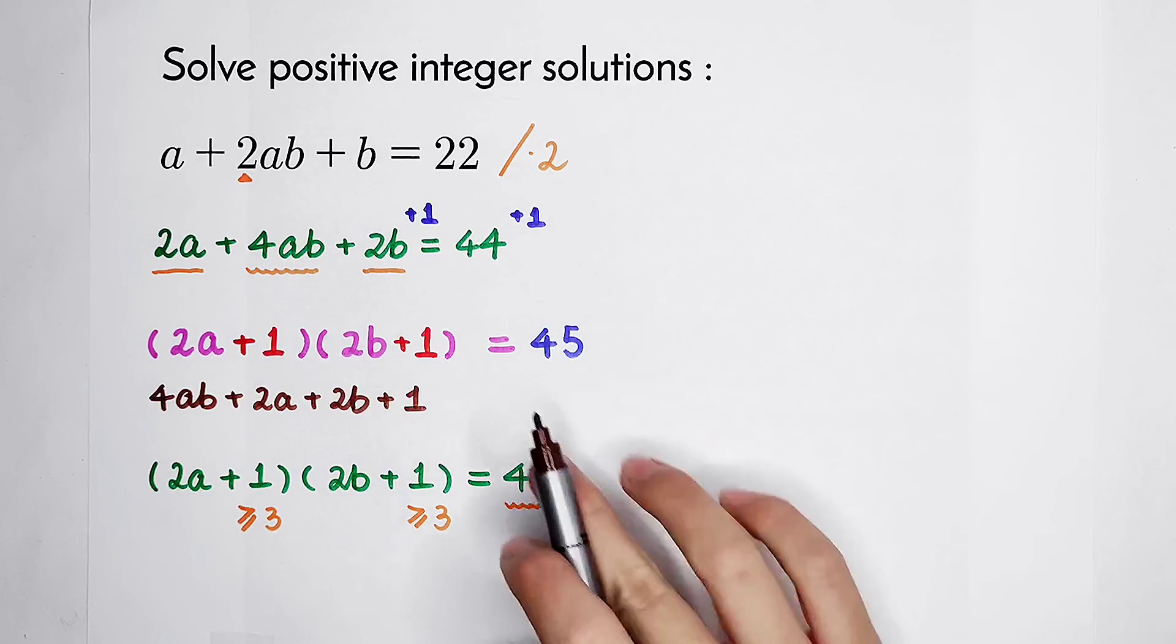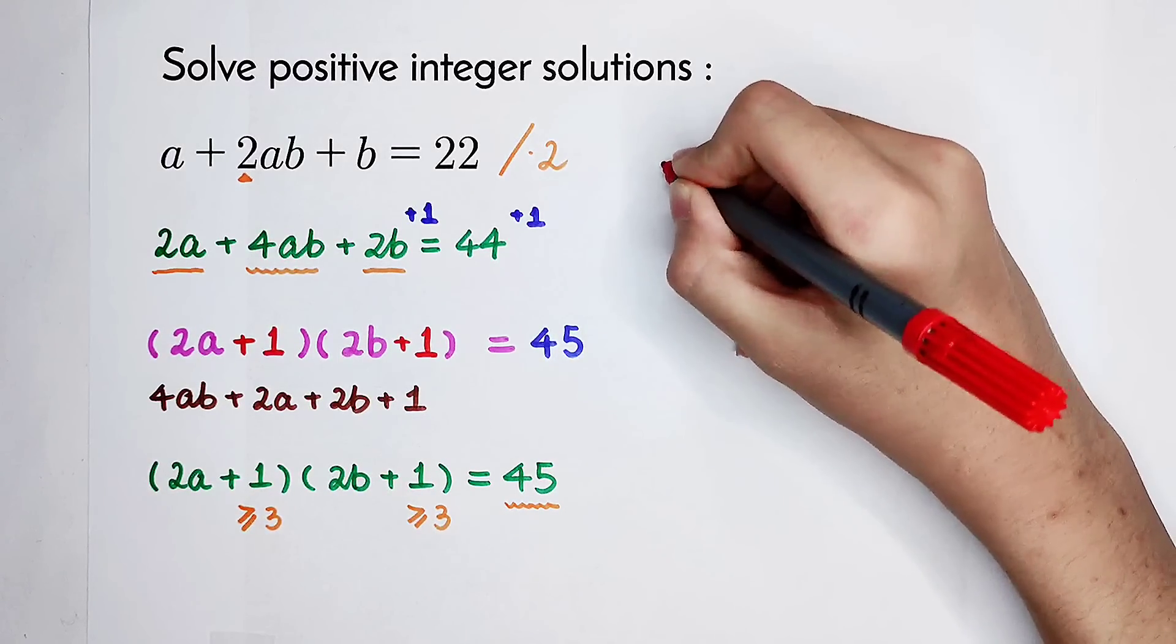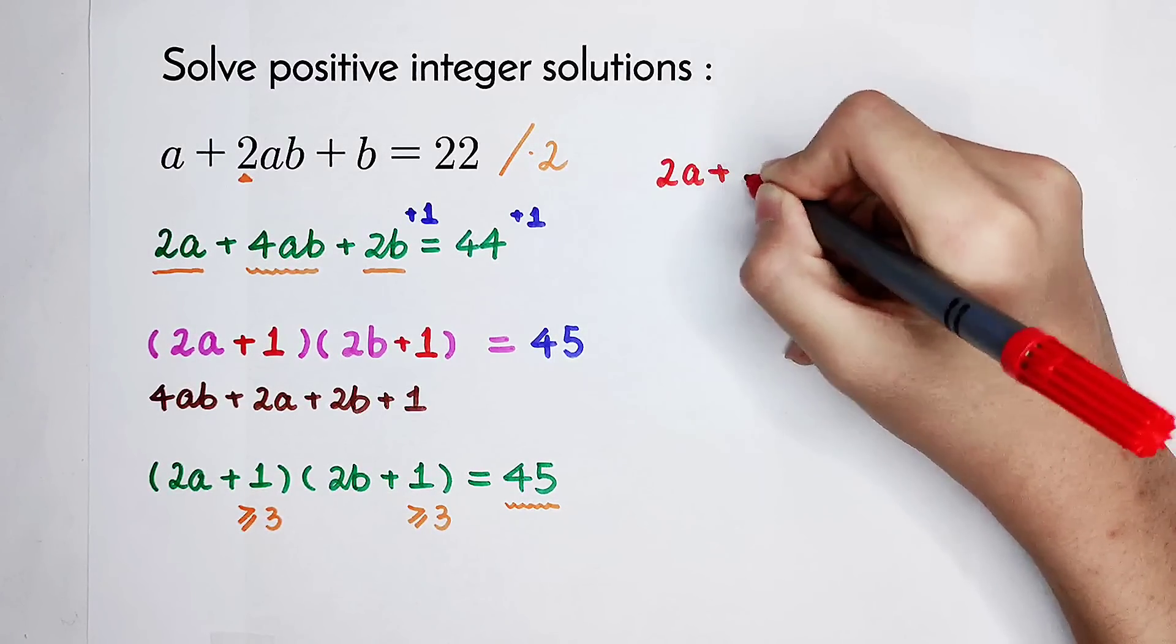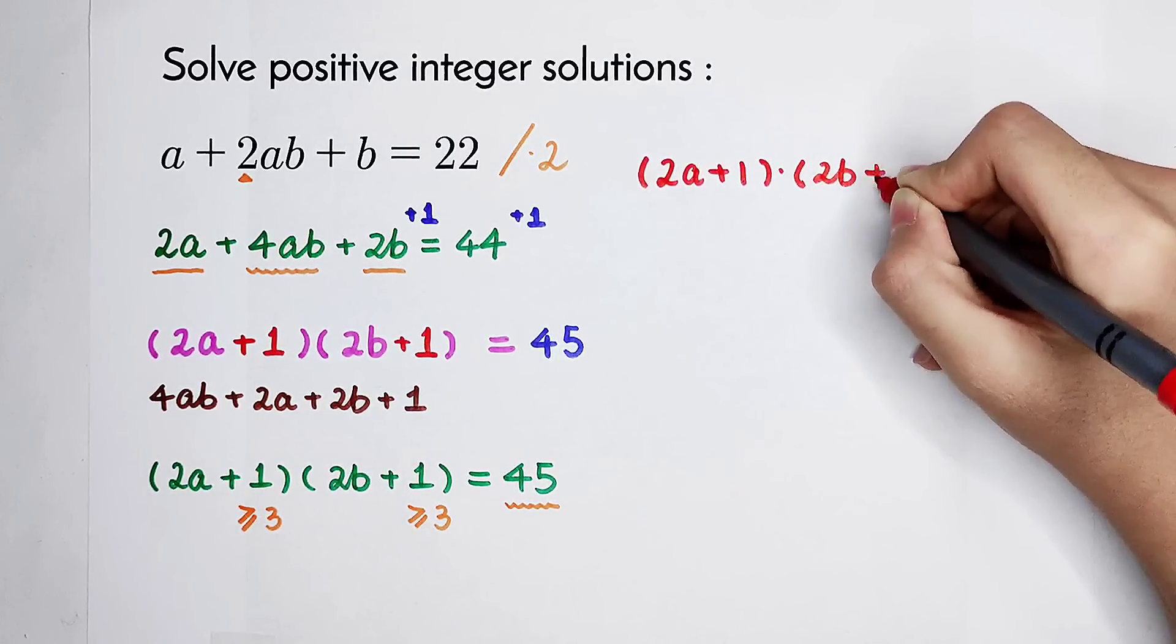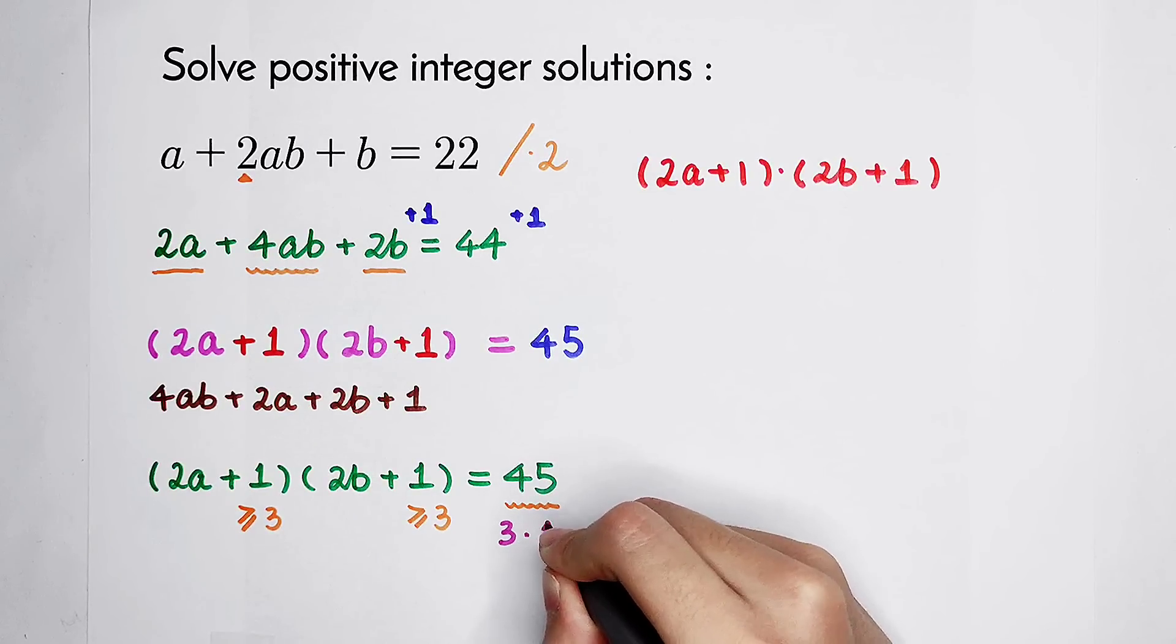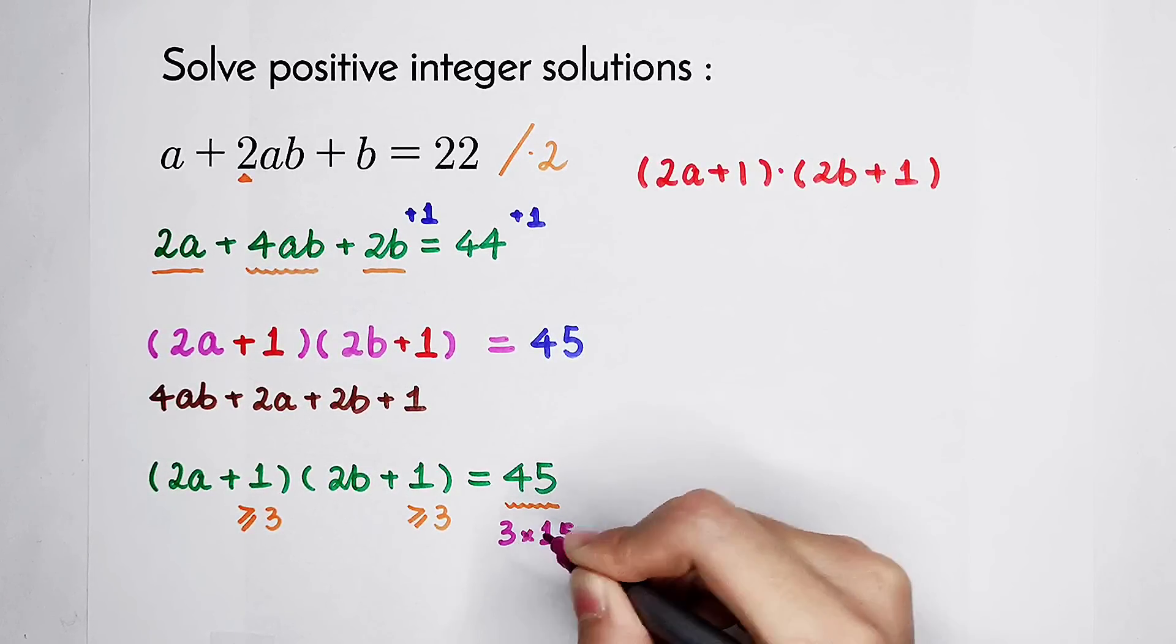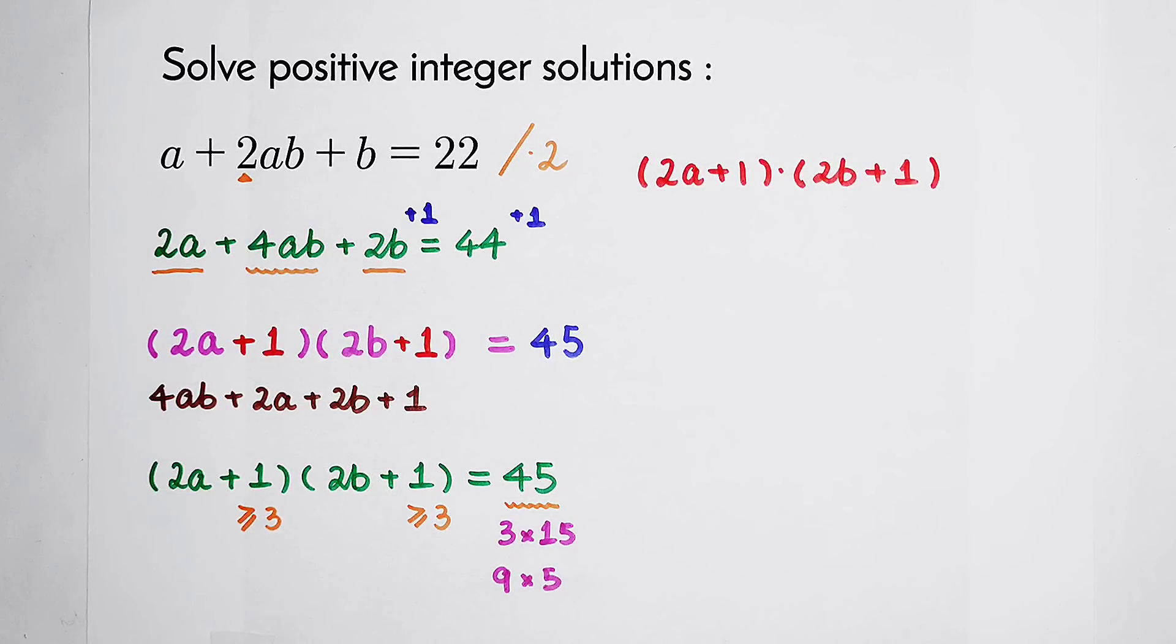And now 45 has to be split into two positive integers. So here is 2a plus 1 times 2b plus 1. 45 can be split into 3 times 15, or 15 times 3, and 9 times 5, or 5 times 9. Only these 4 cases. There's no more.